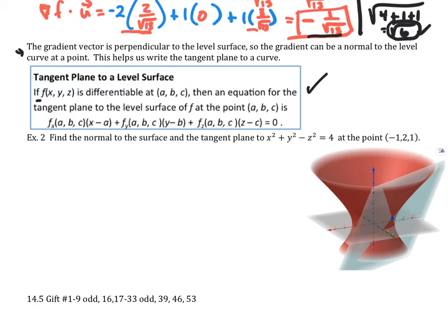And so we have some function and it's differentiable at ABC then an equation for the tangent line to the level surface is just our old familiar one that we had before. Now if we find the normal then we're in business. Well the normal comes again from the gradient. So let's go through this example.